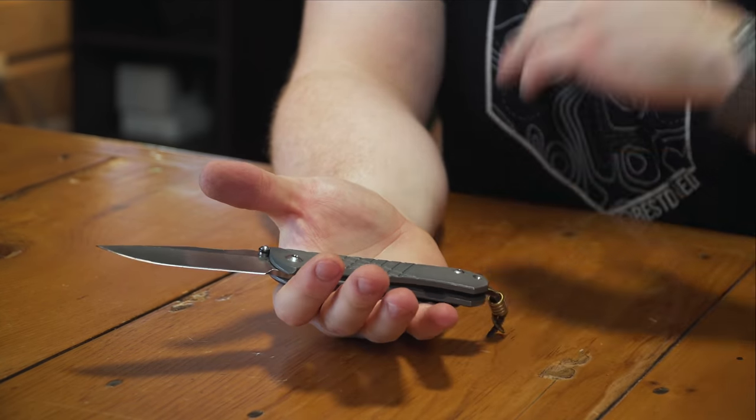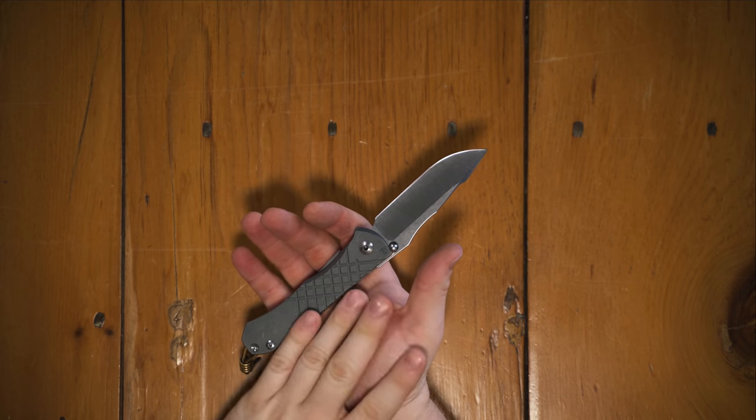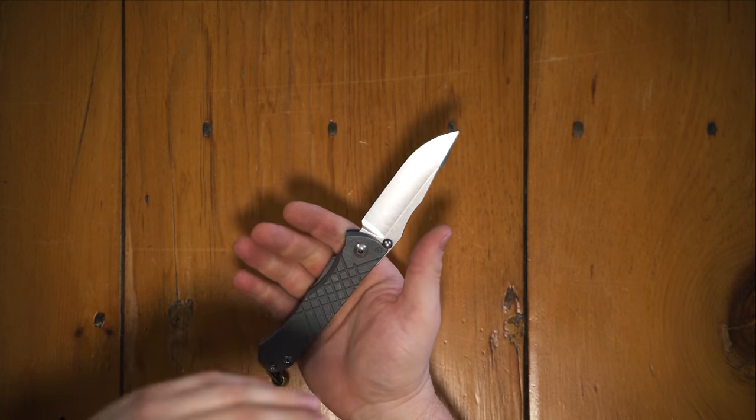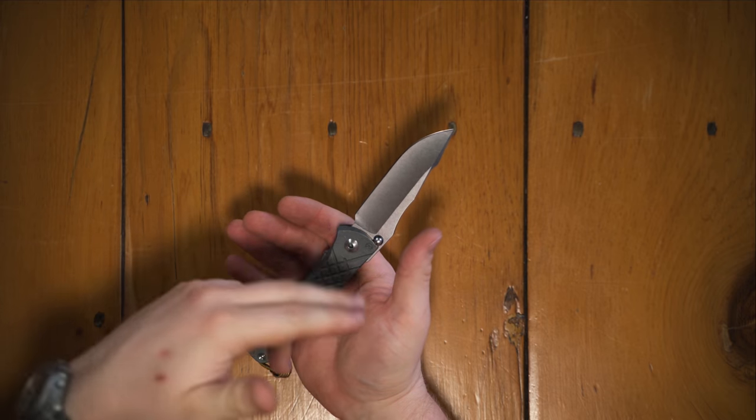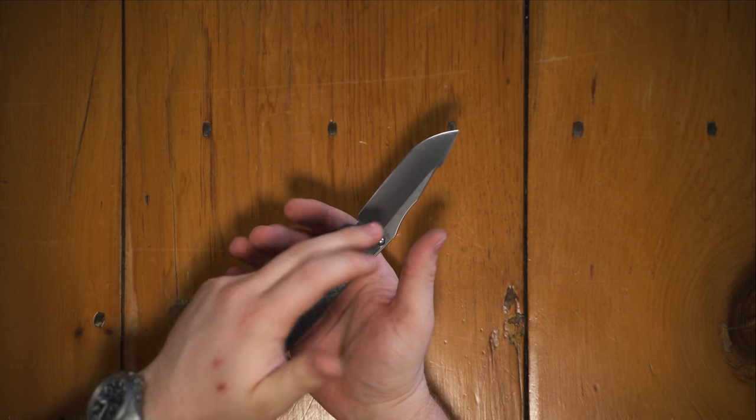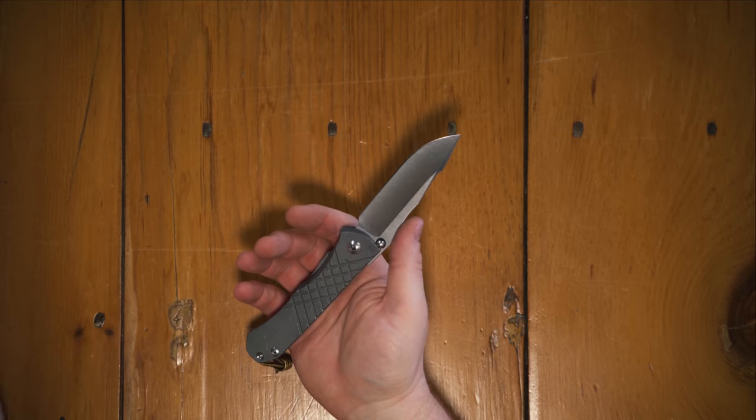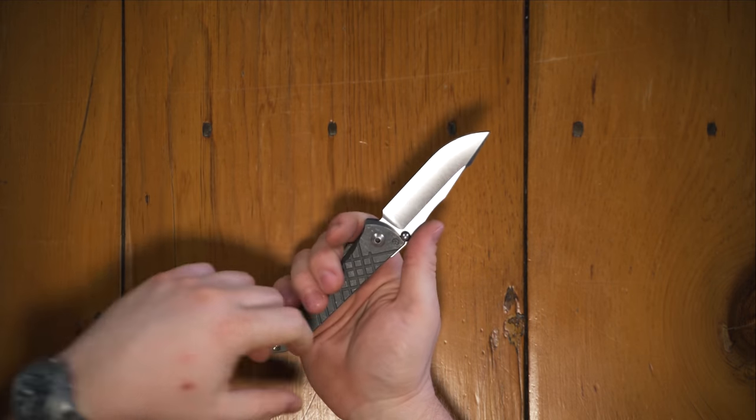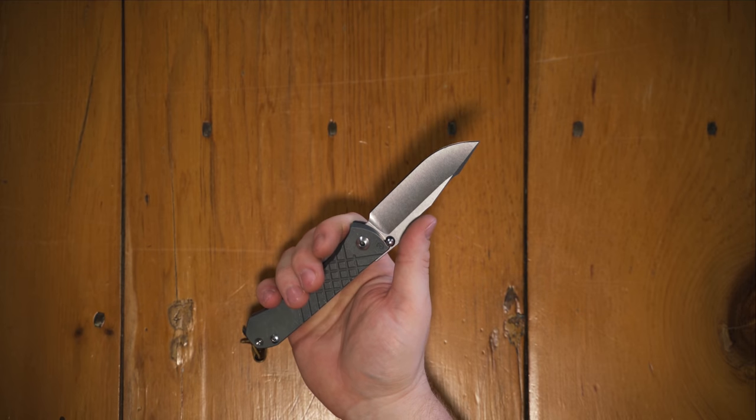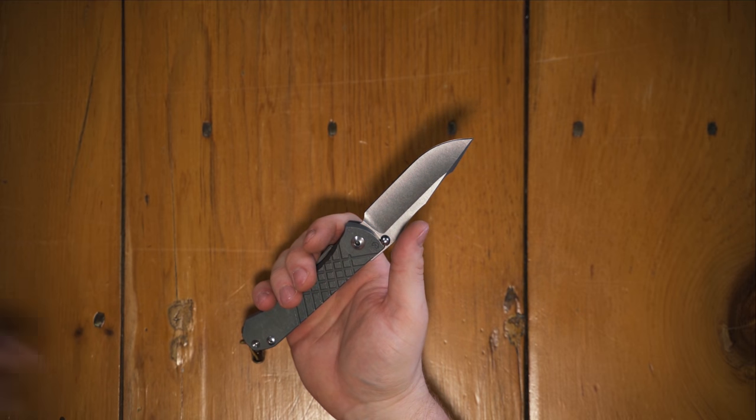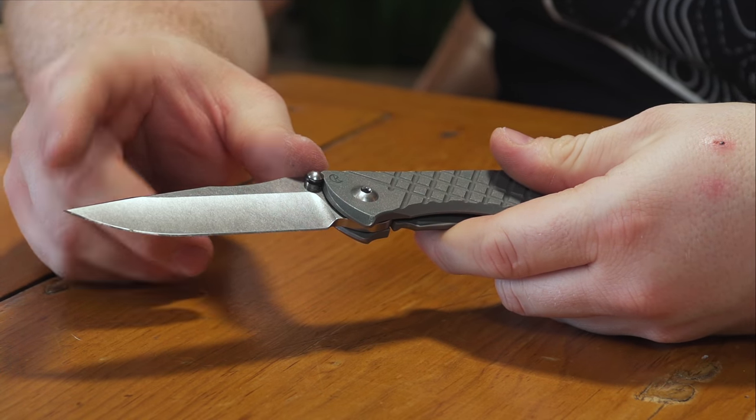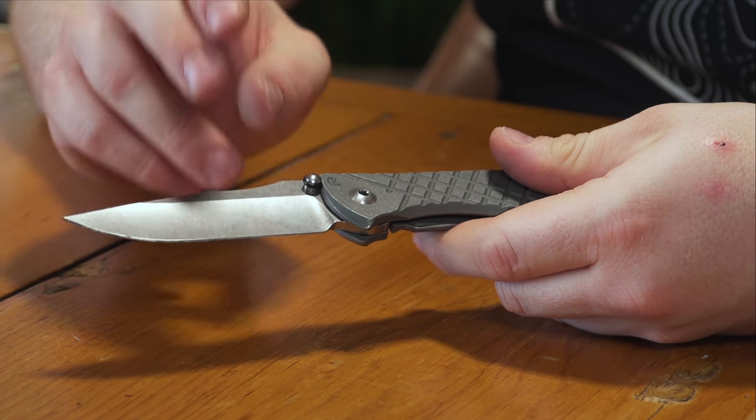So this is getting on up there in price. These are $450 new, not cheap by any means. If you buy them now, they're going to come with S45VN steel. This one's actually one of the last ones in S35. So I didn't wait out long enough for the S45, but that doesn't matter to me. I'm happy with S35. It's fine. It's functioned well for years. I'm okay with it still.